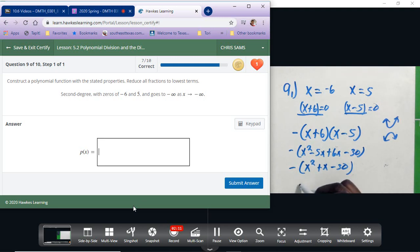And we will have negative x squared minus x plus thirty. Okay, so this is our polynomial that has the given zeros and goes to negative infinity. So negative x squared minus x plus thirty.